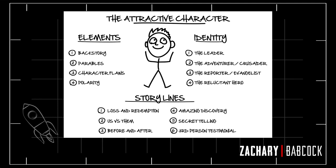The sixth and final storyline is the third-person testimonial, and in my opinion this is one of the most powerful ones. Using actual testimonials that your customers and clients give you, and then telling a story in the third person about their transformation with your product or service, is an amazing way to get people interested in what you have going on and show social proof that what you offer is valuable.